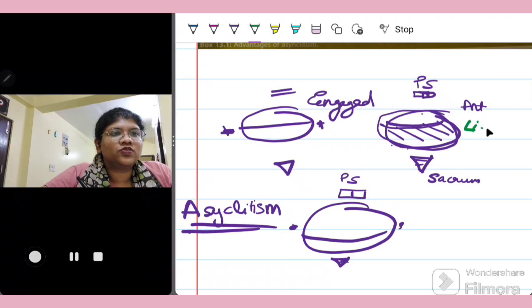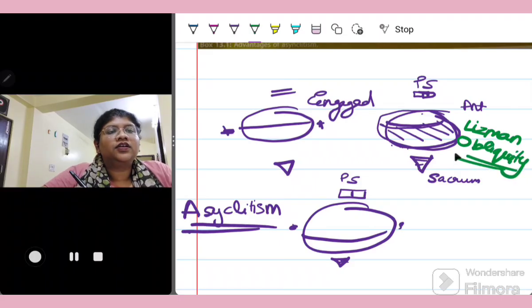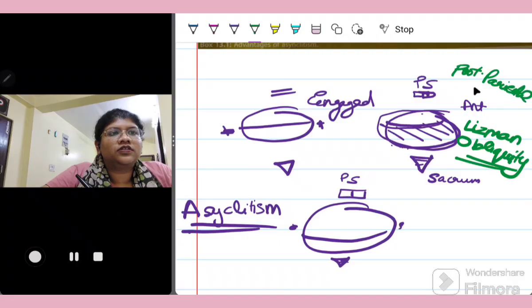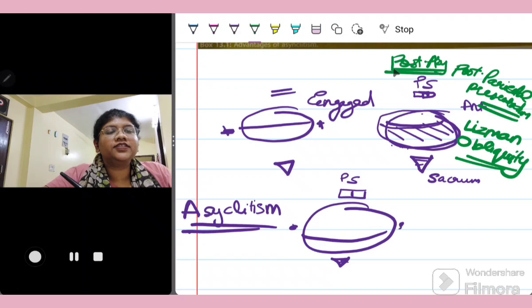This phenomenon has been also given a special name called as the Litzmann obliquity. So this is known as the Litzmann obliquity. This is also known as the posterior parietal presentation. This is also known as the posterior asynclitism.